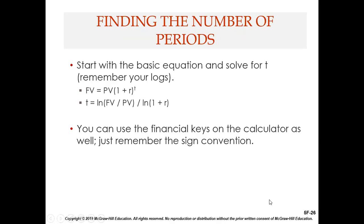The final topic is finding the number of periods. Now we know present value, future value, and interest rate, so we solve for how long we need to invest. The formula uses logarithms: t = log(FV / PV) / log(1 + r). On the calculator, you will use the LOG key. Alternatively, you can use the TVM Solver's beautiful app to do this much more easily.